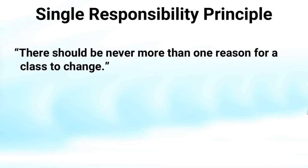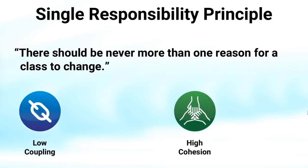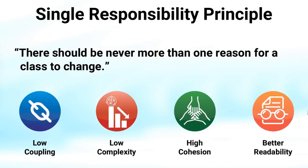Let's start with the Single Responsibility Principle, which states there should never be more than one reason for a class to change. This principle states that an object should only have one responsibility, and that it should be completely encapsulated by the class. When we talk about a responsibility, we mean a reason to change. This principle leads to stronger cohesion in the class, looser coupling between dependency classes, better readability, and code with lower complexity.